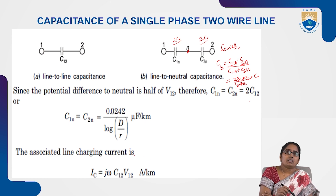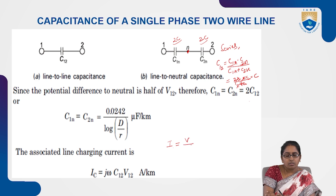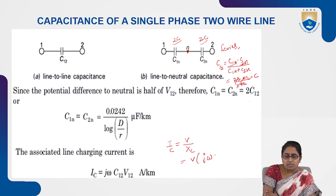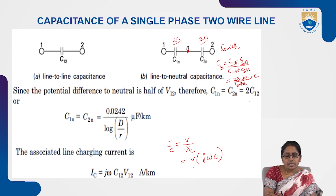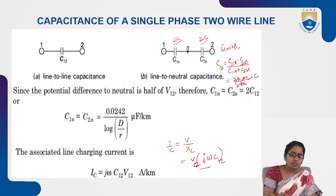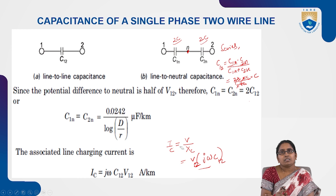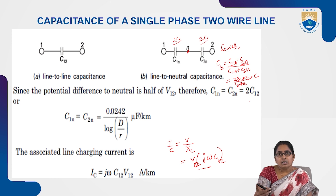The charging current is given by Ic = V / Xc, where Xc = 1/(jωC). So the charging current expression uses C12 as the capacitance and V as the voltage between the two conductors, in amperes per kilometer. Like for inductance problems, related data will be given and we will be asked to calculate the capacitance of the single-phase transmission line and the corresponding charging current.